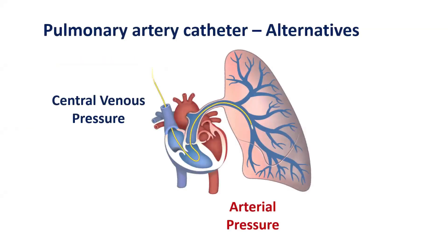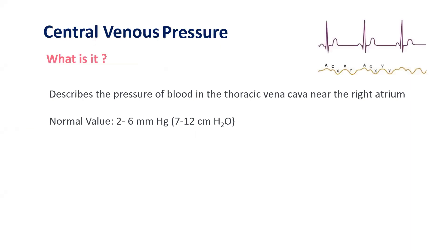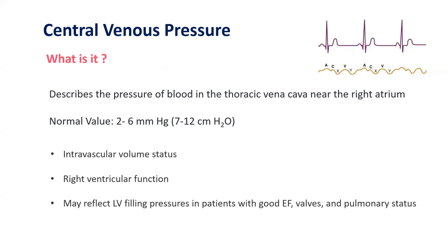For shorter-term alternatives to the pulmonary artery catheter, central venous pressure monitoring and arterial pressure monitoring can be used. Central venous pressure describes the pressure of blood in the thoracic vena cava near the right atrium, with a normal value of about 2 to 6 mmHg. It is considered a surrogate of intravascular volume status, right ventricular function, and may even reflect left ventricular filling pressure in patients with good ejection fraction, normal valves, and normal pulmonary status.